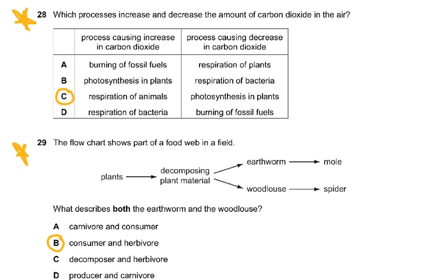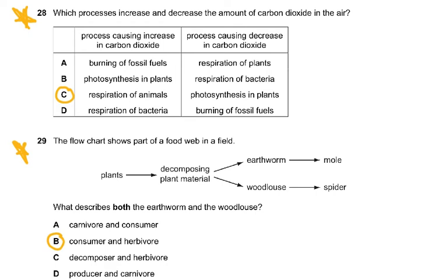Question 28: Which process increases and which decreases the amount of carbon dioxide in the air? The process causing an increase in CO₂ is respiration by animals, and the process causing a decrease is photosynthesis in plants. This was a basic question, but a majority of students got it wrong. Less able candidates believed that plants absorb carbon dioxide for use in respiration.